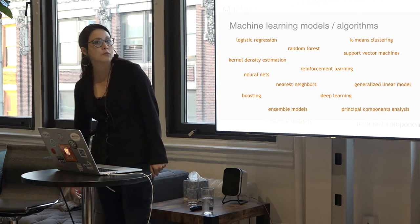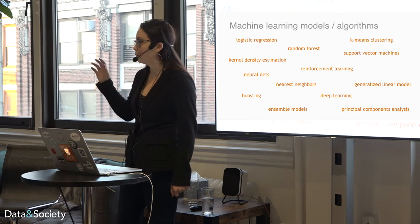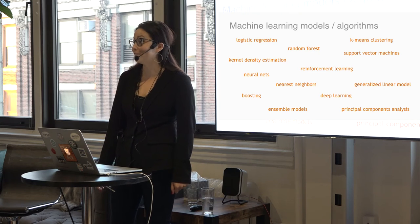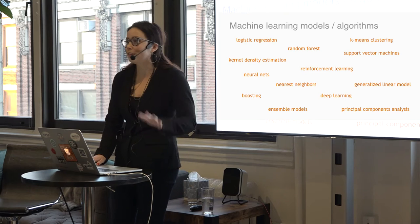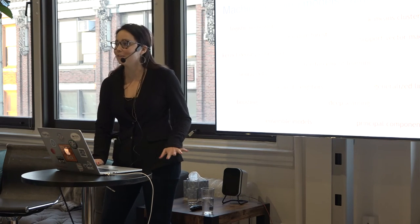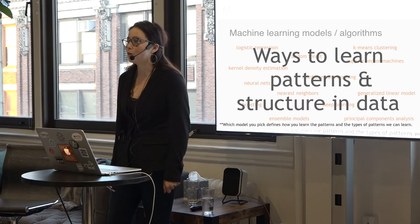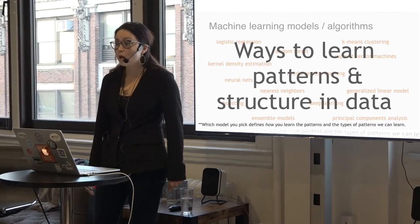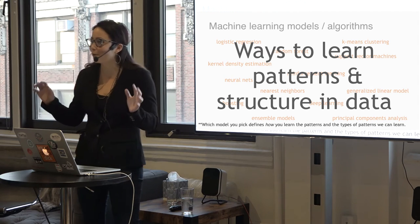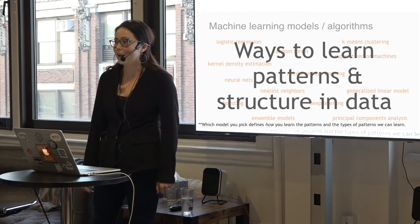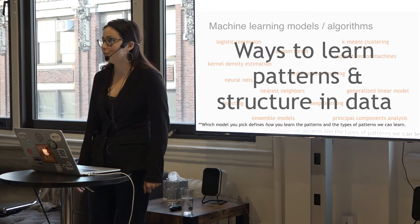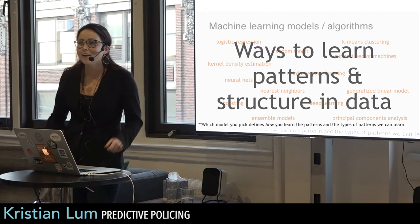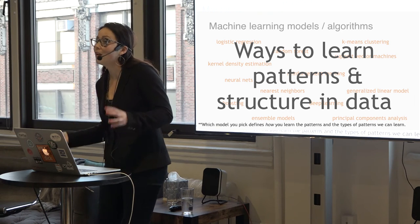So what is machine learning? There are a lot of words on this screen — random forest, reinforcement learning, deep learning. That one's very popular these days. But from my point of view today, all I really want you to think when you see these things is that they are just ways to learn patterns and structure in data — specifically in the data that you give to the algorithms. Which model you pick defines how you learn patterns and what types of patterns you can learn: some learn straight lines, some squiggles, some stairs. But ultimately we're trying to do the best job we can learning the patterns that exist in the data we give to the machine learning algorithm.